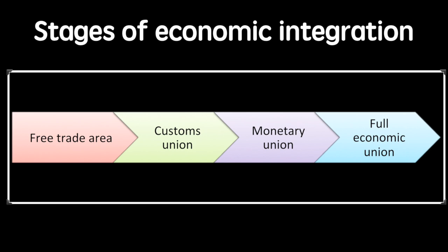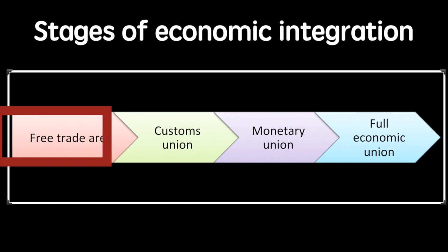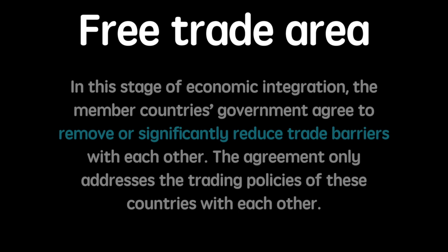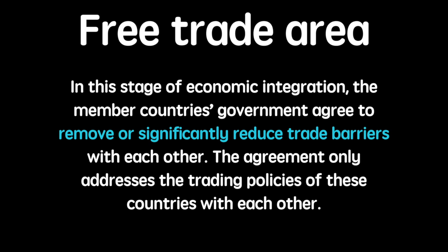First up is the free trade area. In this stage of economic integration, the member countries' governments agreed to remove or significantly reduce trade barriers with each other. The agreement only addresses the trading policies of these countries with each other, meaning that countries do not set policies towards countries not in the free trade area.